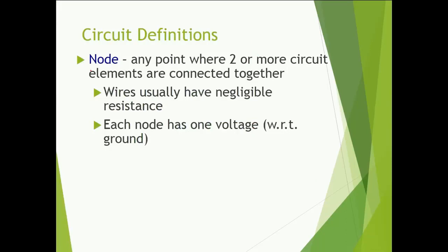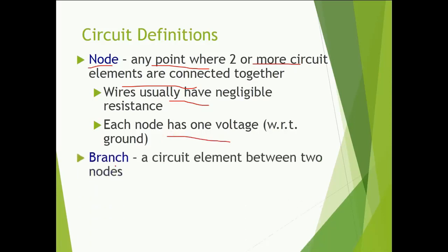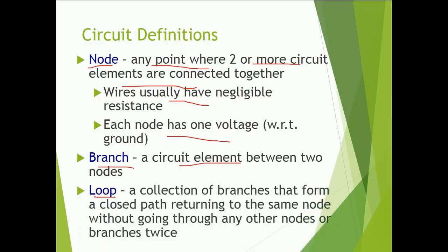What do you understand by a node? Any point where two or more circuit elements are connected together is known as a node. Wires usually have negligible resistance, so we do not consider any resistance of the wire for calculating numericals unless it is given. Each node has one voltage with respect to ground. A circuit element between two nodes is known as a branch. A collection of branches that form a closed path returning to the same node without going through any other nodes or branches twice is known as a loop. We will see nodes, branches, and loops with the help of examples.